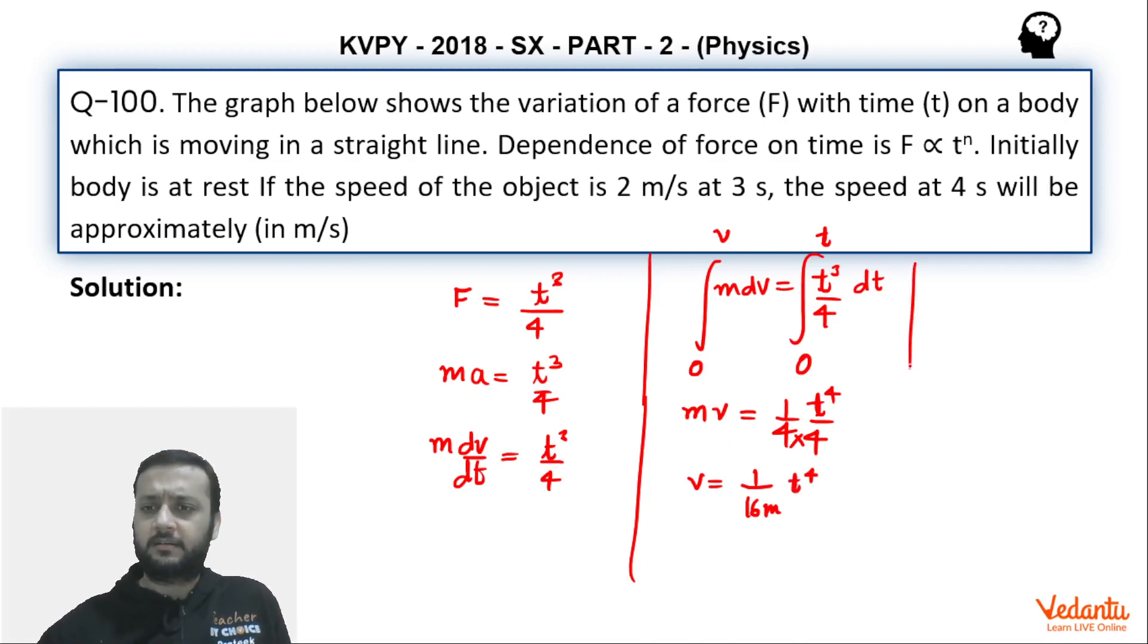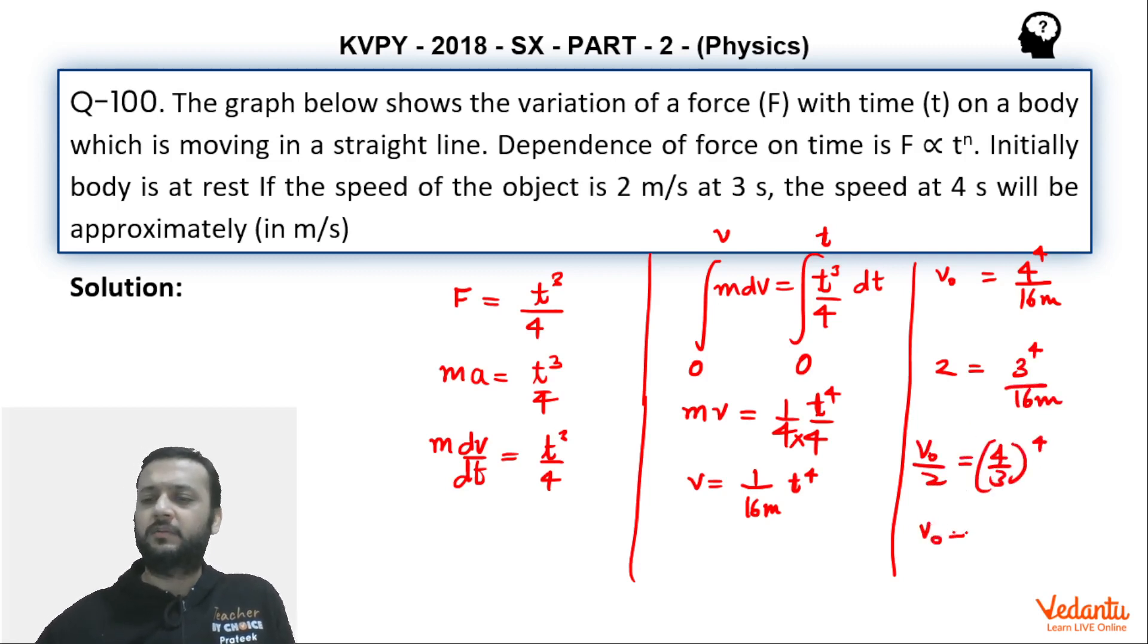We can just, let's say that velocity at t equals 4 second is V0. This is the velocity at t equals 4 second. So this will be equals to 4 to the power 4 divided by 16m. Similarly, velocity at 3 seconds was 2. That means 2 will be equals to 3 to the power 4 divided by 16m. From here, we can take the ratio V0 upon 2 will be equals to 4 by 3 to the power 4. You can put this in your calculator, and you will get this somewhere around 6.3 approximately.